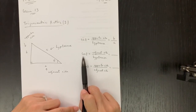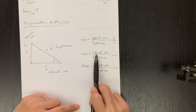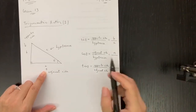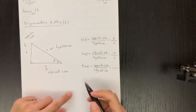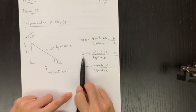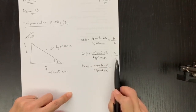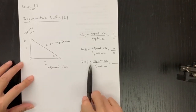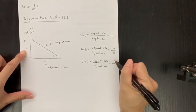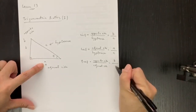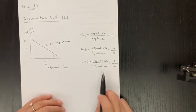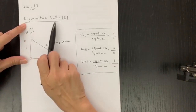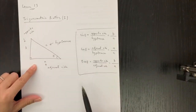Now we come to cosine theta. The formula for cosine theta is adjacent side over hypotenuse. A is adjacent, and hypotenuse is C, so cosine theta is equal to A over C. Next, tangent theta: the formula is opposite side over adjacent side, so that is B over A. This is how we work out the relationship for trigonometric ratios, and we have three of them.